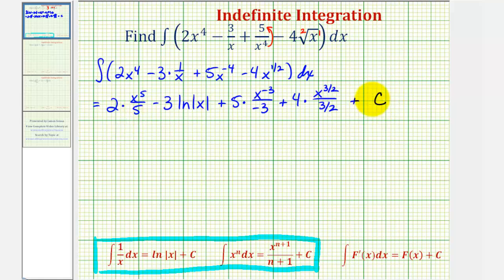And now we just need to simplify all this. So I'll write this first term as two-fifths x to the fifth minus three natural log absolute value of x. Notice how we have a negative here, it's going to be minus five-thirds x to the negative three.